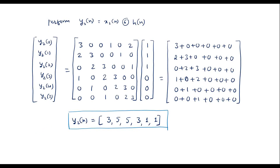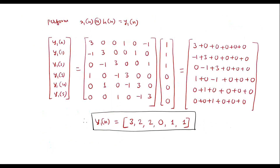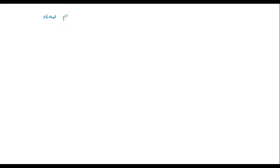Now we have the third sub-block x3[n]. We perform circular convolution between x3[n] and h[n]. Compute y3[n] which equals x3[n] circularly convolved with h[n], giving the column matrix y3[0] through y3[5].